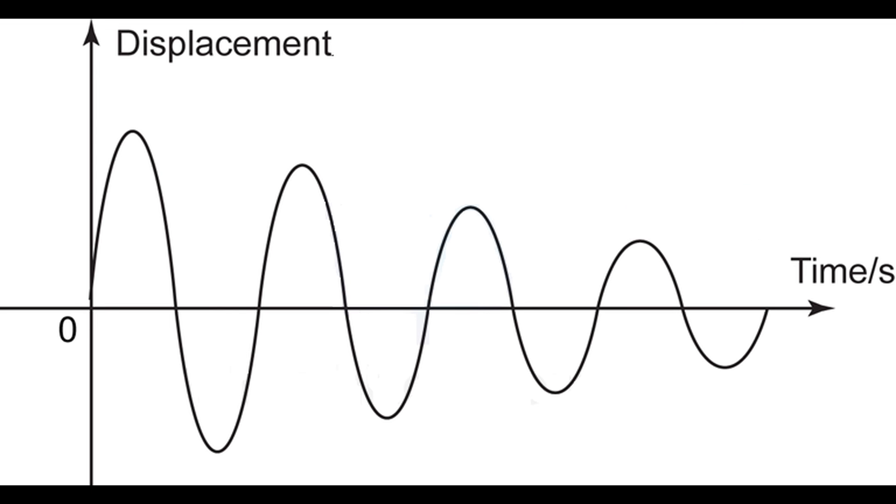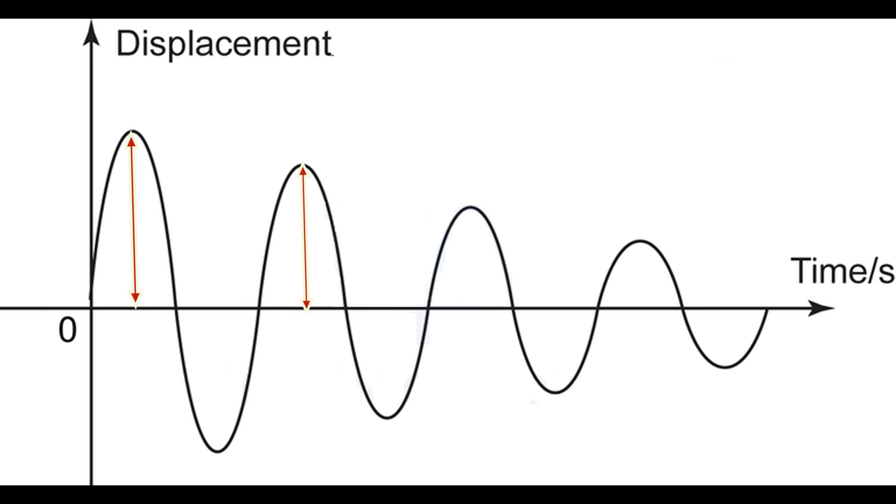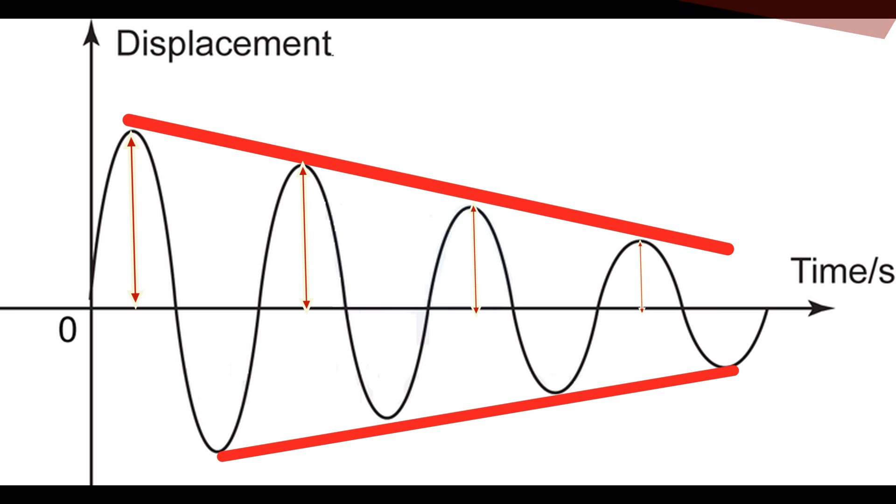Now if there was no resistance, then the sine wave will stay the same and the amplitude won't become smaller. However, in reality the amplitude decreases with time. And this is what we call light damping.